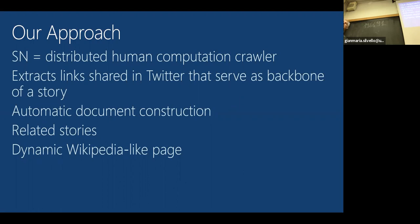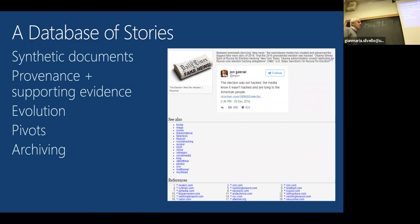We're going to look at Twitter as a human crawler. You all have Twitter accounts and occasionally share a link—that's a form of crawling, telling me this link is valuable. What we'll do is extract all the links shared as the backbone of a particular story, then automatically build a synthetic document, identify related stories, and this synthetic document will be like a Wikipedia page. The goal is to build a database of stories or events.